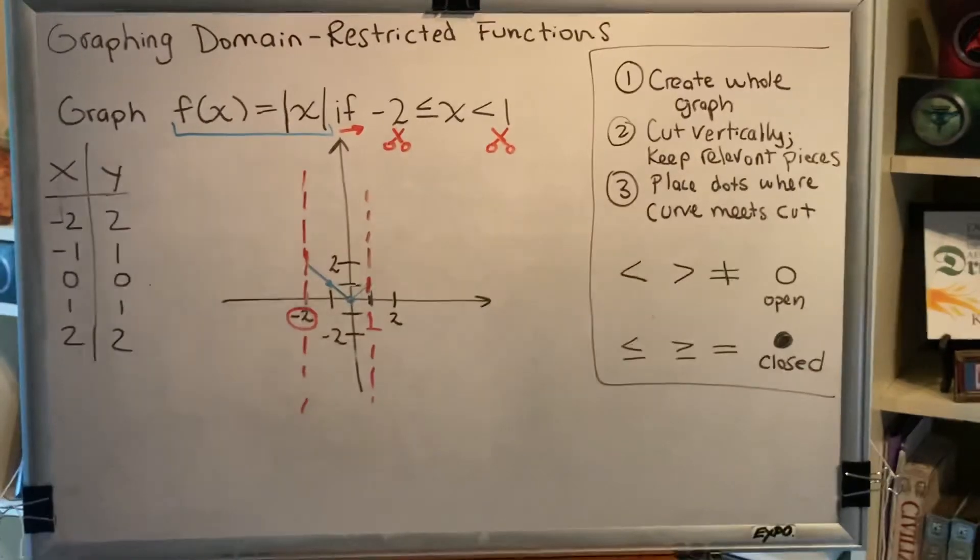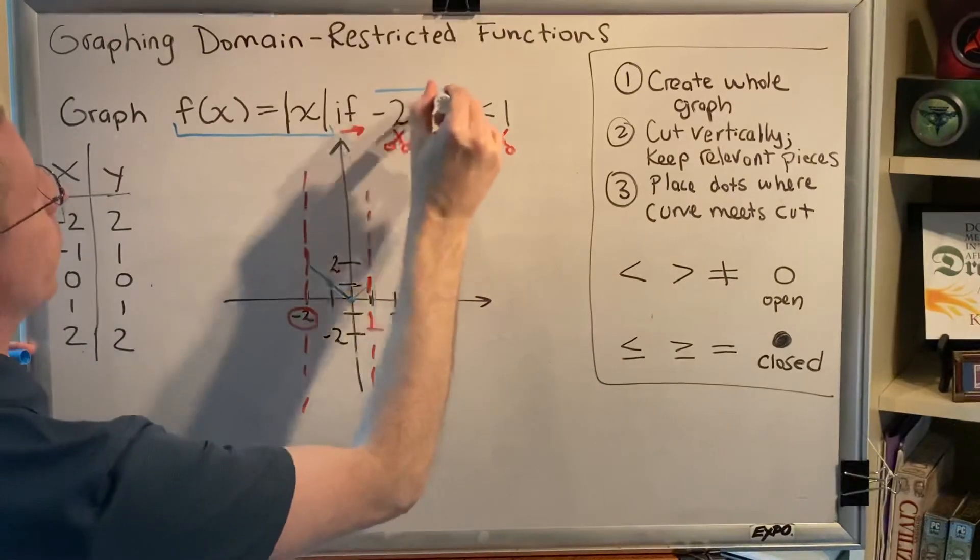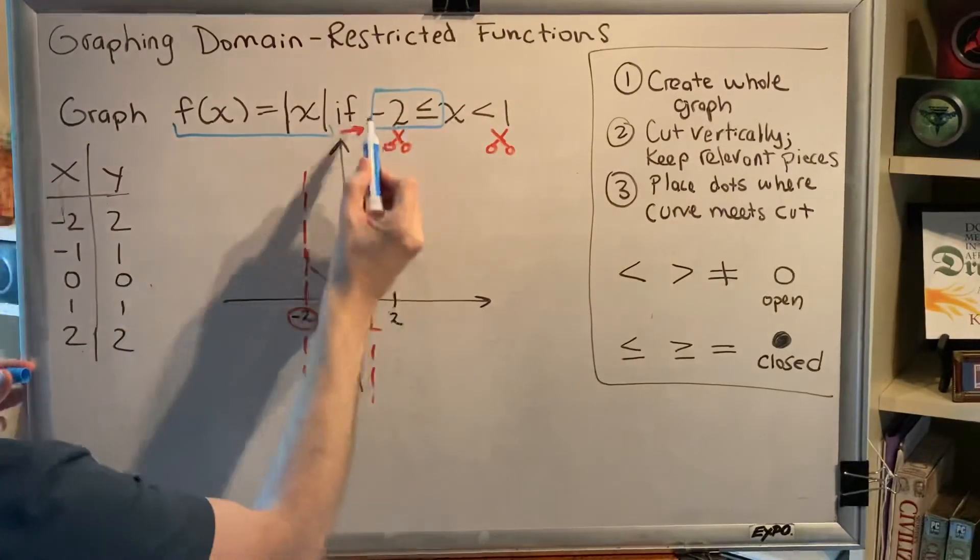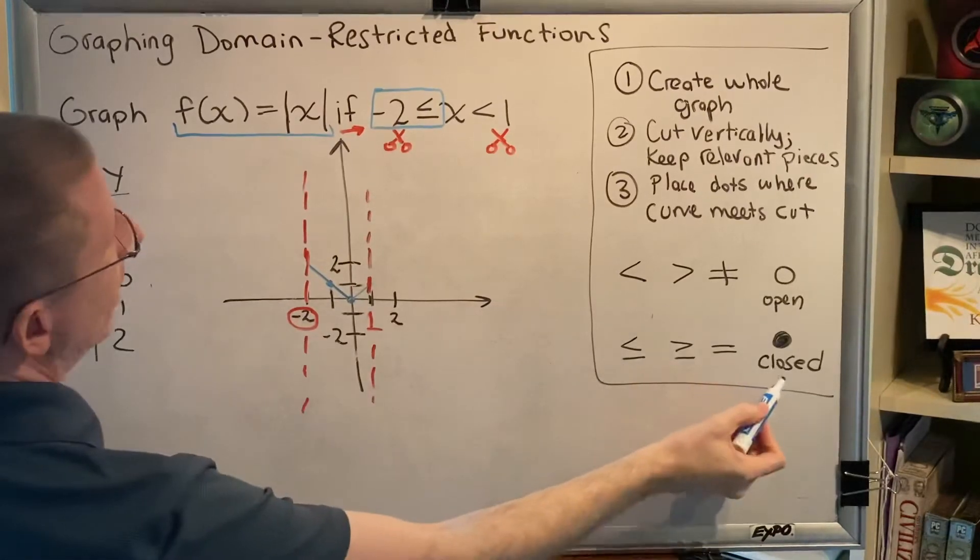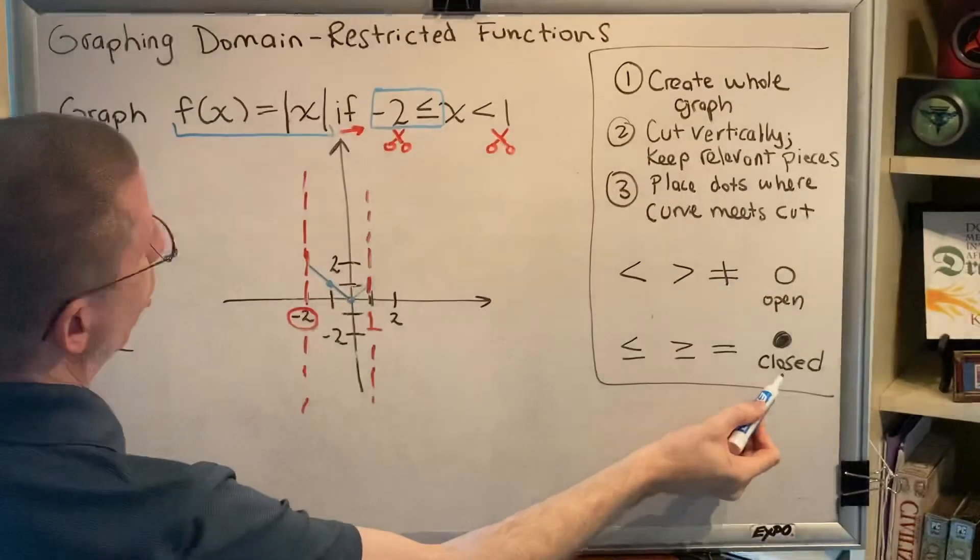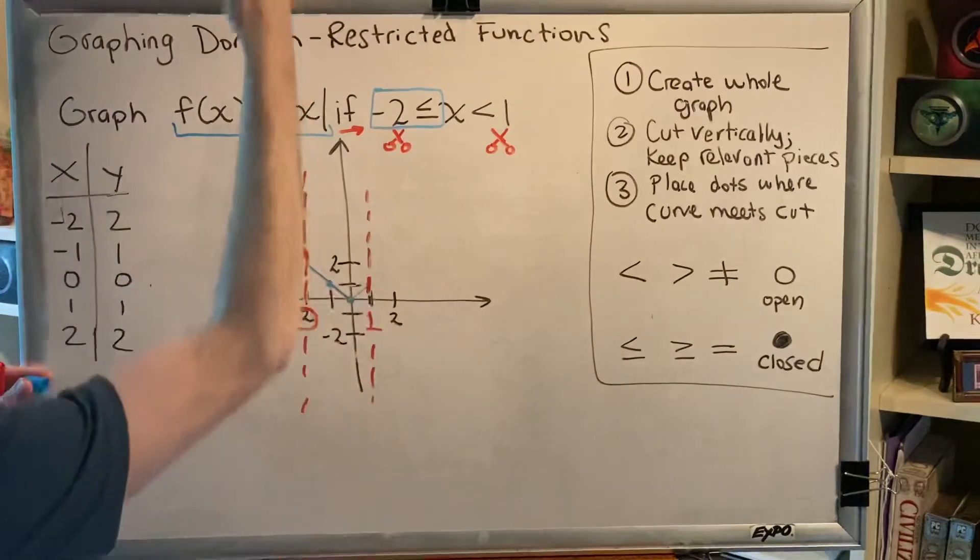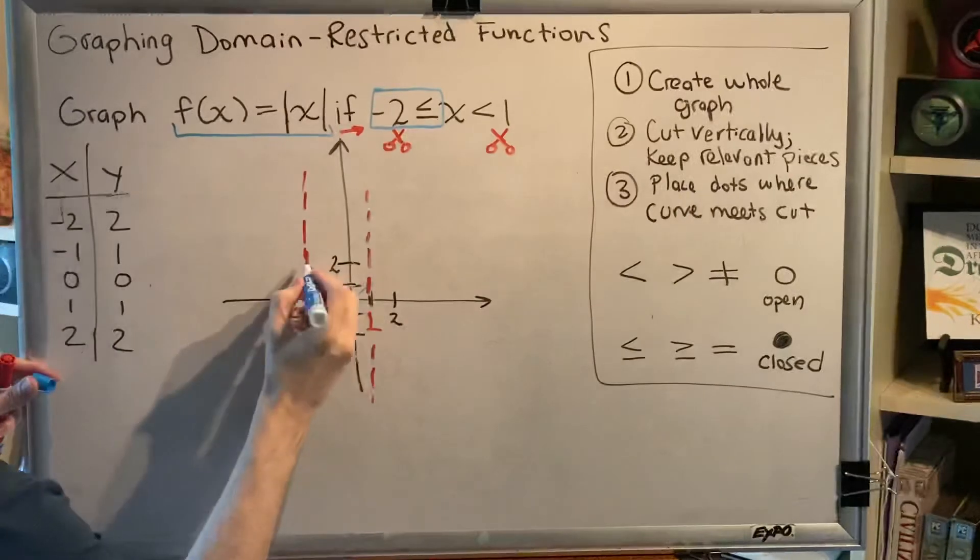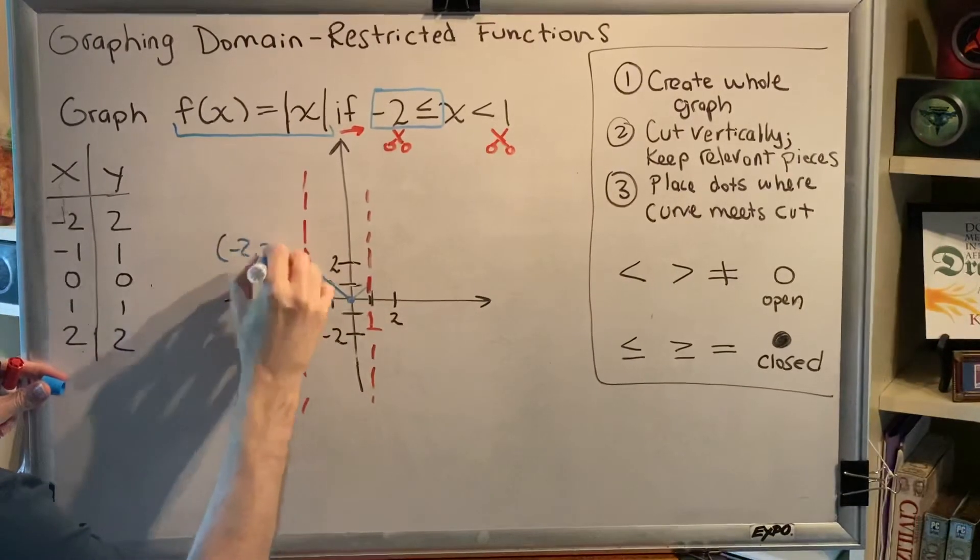Step 3. We place dots where the curve meets the cut. All right. So the first dot comes from this. Negative 2 is next to the less than or equal to symbol, which indicates a closed dot. So I need a closed dot at negative 2, where the blue curve meets the red cut. So a closed dot here at coordinates negative 2, 2.